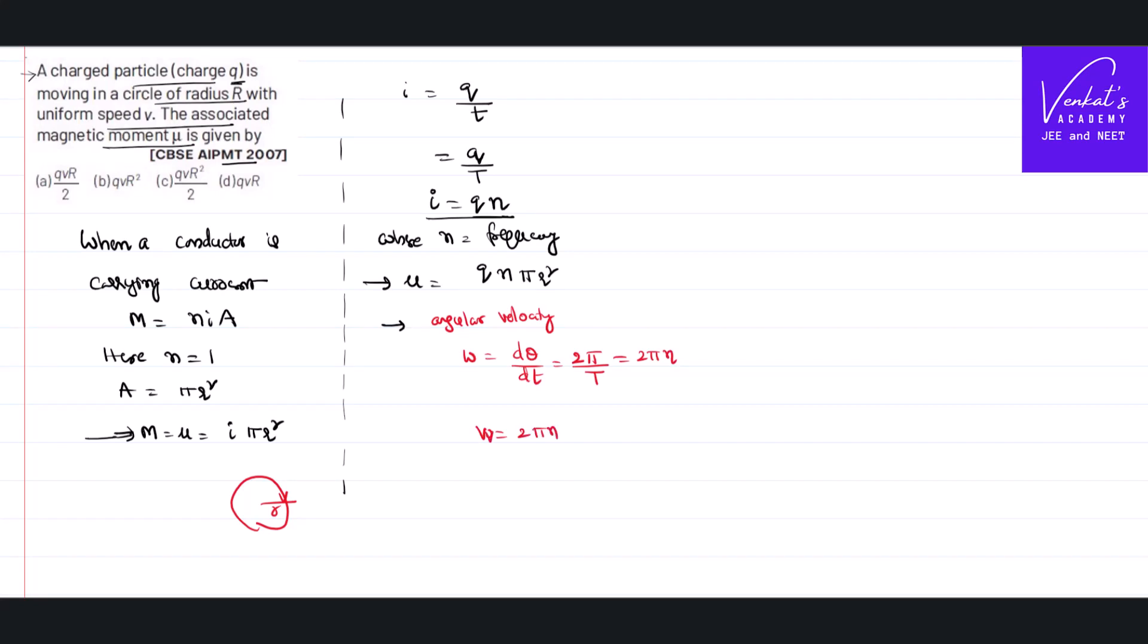But omega is not given for you. Linear speed, uniform speed is given for you. So, for a body in rotatory motion relation between linear and angular velocity is V equal to r omega. That implies in the place of omega, I can write V by r.